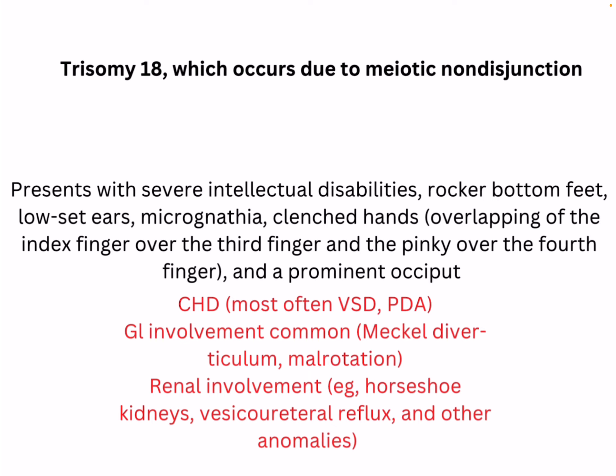The congenital heart diseases associated with Edward Syndrome are ventricular septal defect and patent ductus arteriosus. Gastrointestinal involvement is common, including Meckel's diverticulum and malrotation. Renal involvement is seen in the form of horseshoe-shaped kidneys with vesicoureteral reflux and other anomalies.